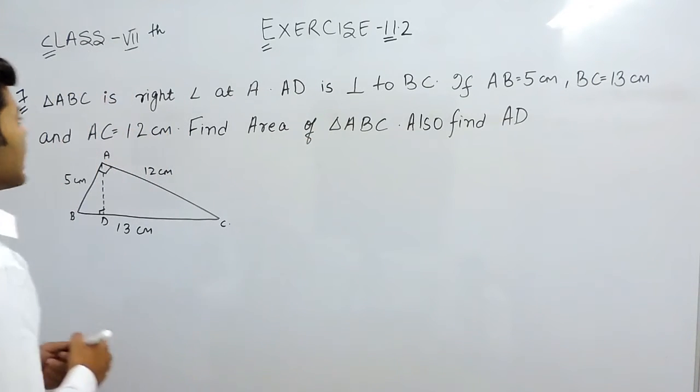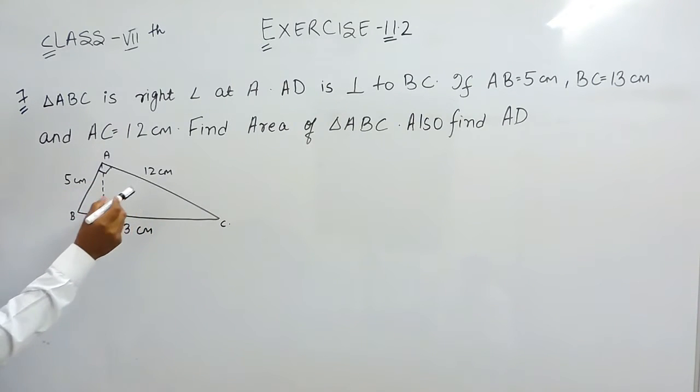Hello everyone. Now we will do the 7th question of exercise 11.2. In this question we are given a triangle ABC which is right angle at A.